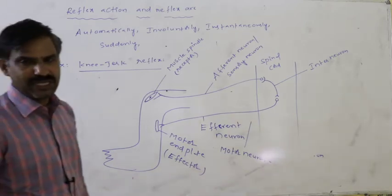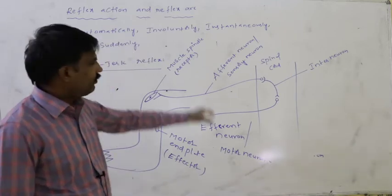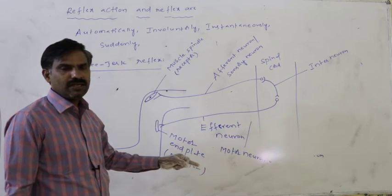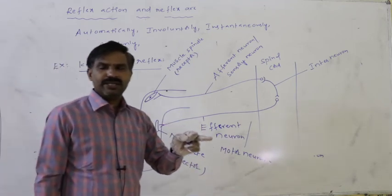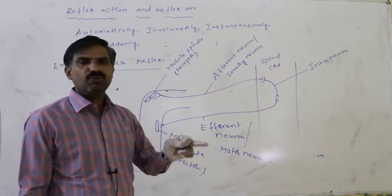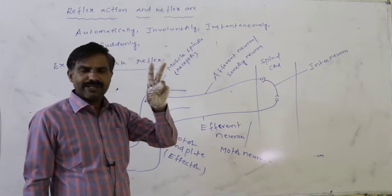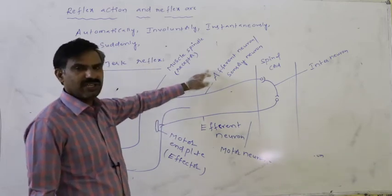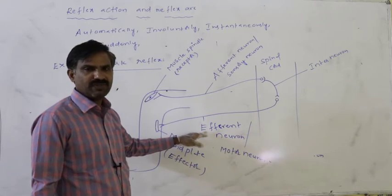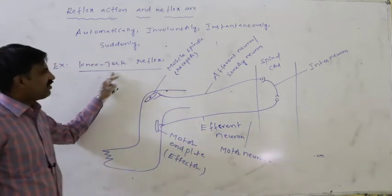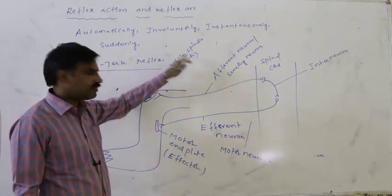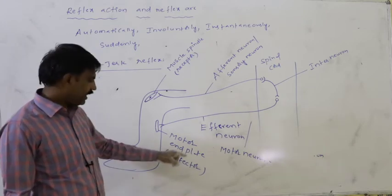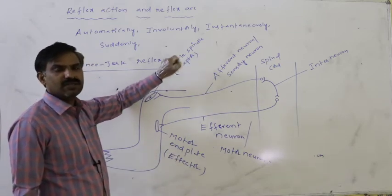Important objective exam questions on this concept: How many neurons are involved in the reflex arc? At least two — one is the afferent neuron and the second is the efferent neuron. What is the receptor of the knee-jerk reflex? The muscle spindle is the receptor. What is the effector in the knee-jerk reflex? The motor end plate is the effector.